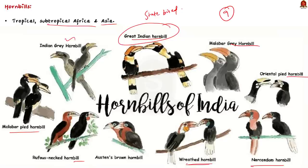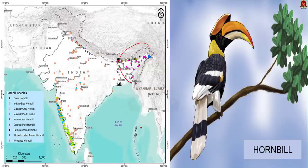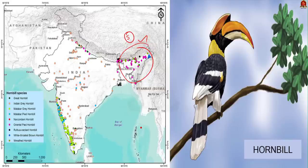The Northeastern region has the highest diversity of Hornbill species within India; five species are found there, of which the Wreathed Hornbill, Rufous-necked Hornbill, and White-throated Brown Hornbill are restricted to this region within India. The Narcondam Hornbill is found only on Narcondam Island in the Bay of Bengal. The Indian Grey Hornbill occurs across the Indian subcontinent, the Malabar Pied Hornbill is found only in India and Sri Lanka, and the Malabar Grey Hornbill is endemic to the Western Ghats.